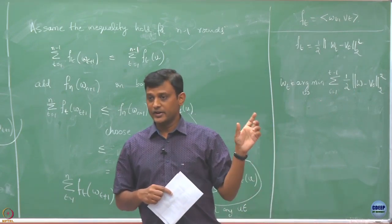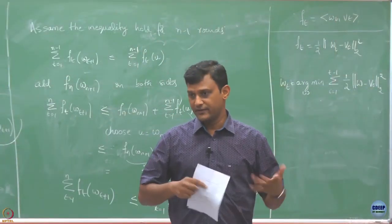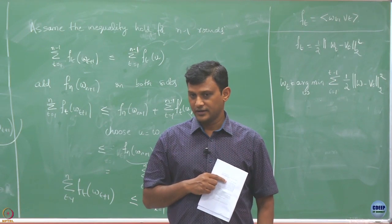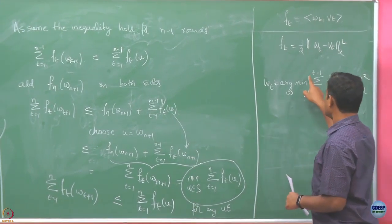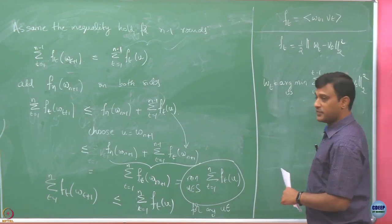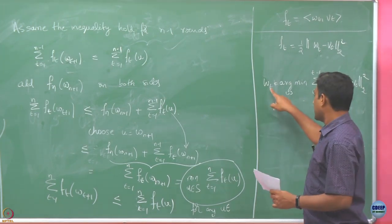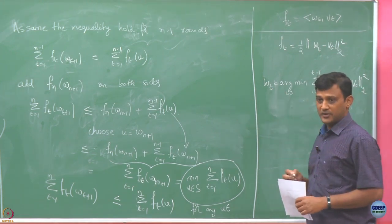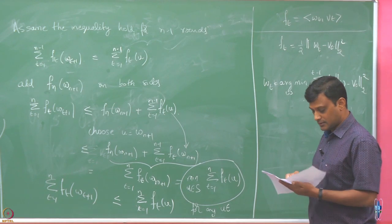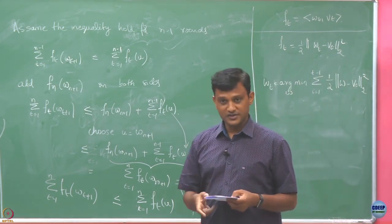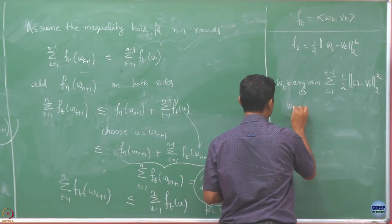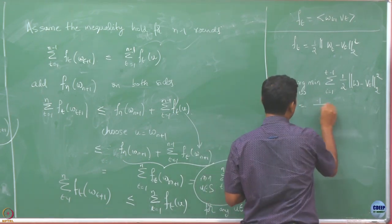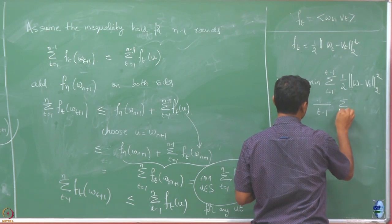This is the FTL algorithm, so how do you choose W_1? You choose W_1 in any way you like. We are only worried about subsequent ones. For T equals 1 I do not have anything to optimize — I will choose W_1 arbitrarily. But after T equals 2 I am going to start optimizing. The answer is the mean — W_T is going to be just the mean of all the V_T's.